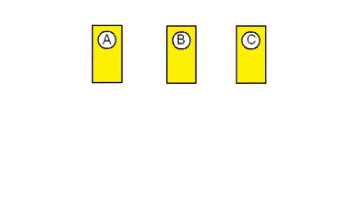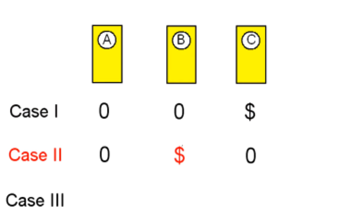When you, the contestant, start the game, there are three possible cases. The prize, indicated by the dollar sign, is either behind door C, behind door B, or behind door A.